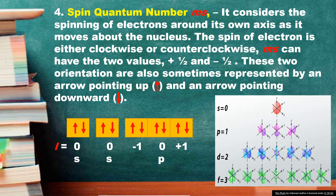The last quantum number is the spin quantum number, MS. It considers the spinning of electrons around their own axis as they move about the nucleus. The spin of electrons is either clockwise or counterclockwise. MS can have two values: positive one-half and negative one-half, also represented by an arrow pointing up and an arrow pointing downward. According to the Pauli exclusion principle, no two electrons can have the same set of quantum numbers — they will have opposite spin values. When N is equal to 1, L must be 0, describing the S orbital, which can accommodate only two electrons with MS of positive one-half and negative one-half.